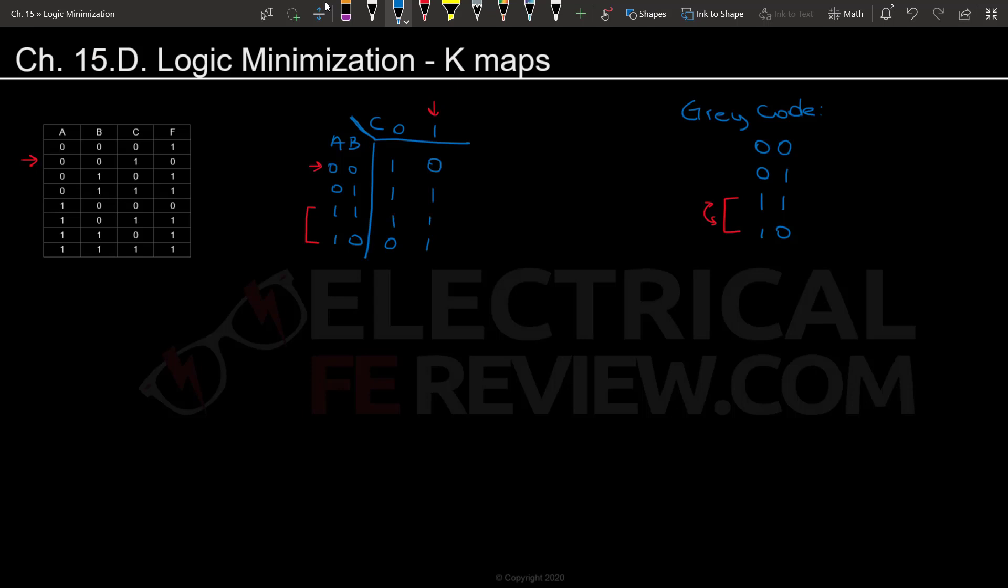And then you're going to do the 101 which will be the 1. And finally you're going to go to the 110. So you're going to put 11. And that's our first kmap. So the construction is pretty easy. It's basically following a set of steps.